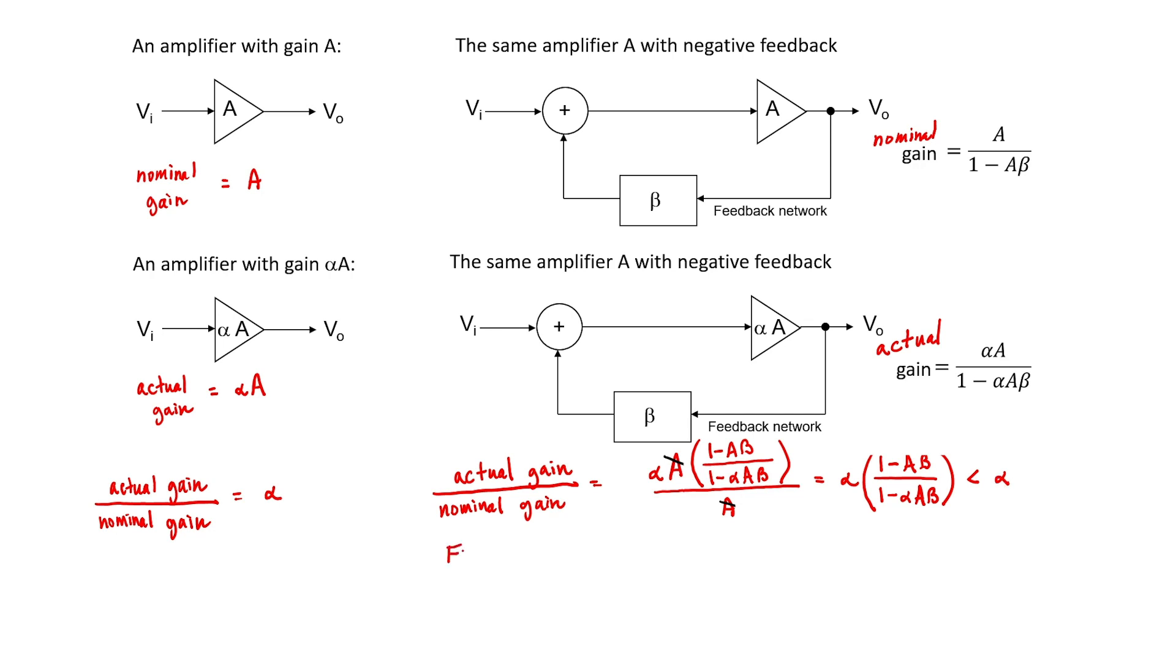It turns out that this term is less than alpha. This is what we want. For instance, if alpha equals 1.01 and A beta equals negative 1, then this term ends up equaling 1.005. This is smaller than alpha, which was 1.01. What this means is that if I have an amplifier with a component tolerance of 1%, and I take that amplifier and I put it into a feedback network, I can reduce the component tolerance to only 0.5%.